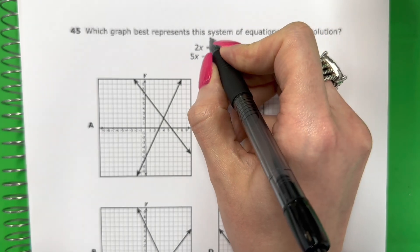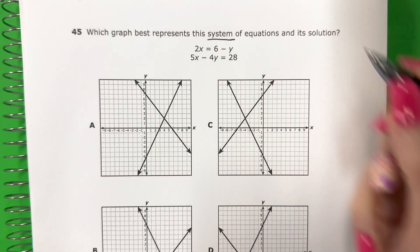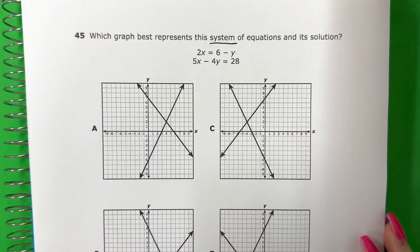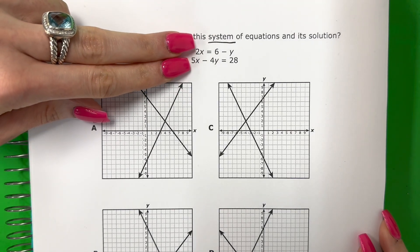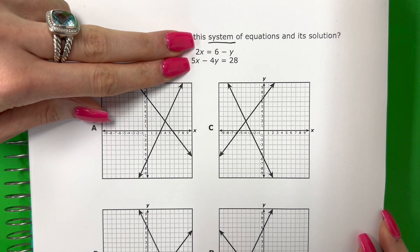Okay, so I have a system. Tengo una sistema. What is a system? ¿Qué es una sistema? That's when I have two equations at the same time. Este es cuando tengo dos ecuaciones en la misma vez.